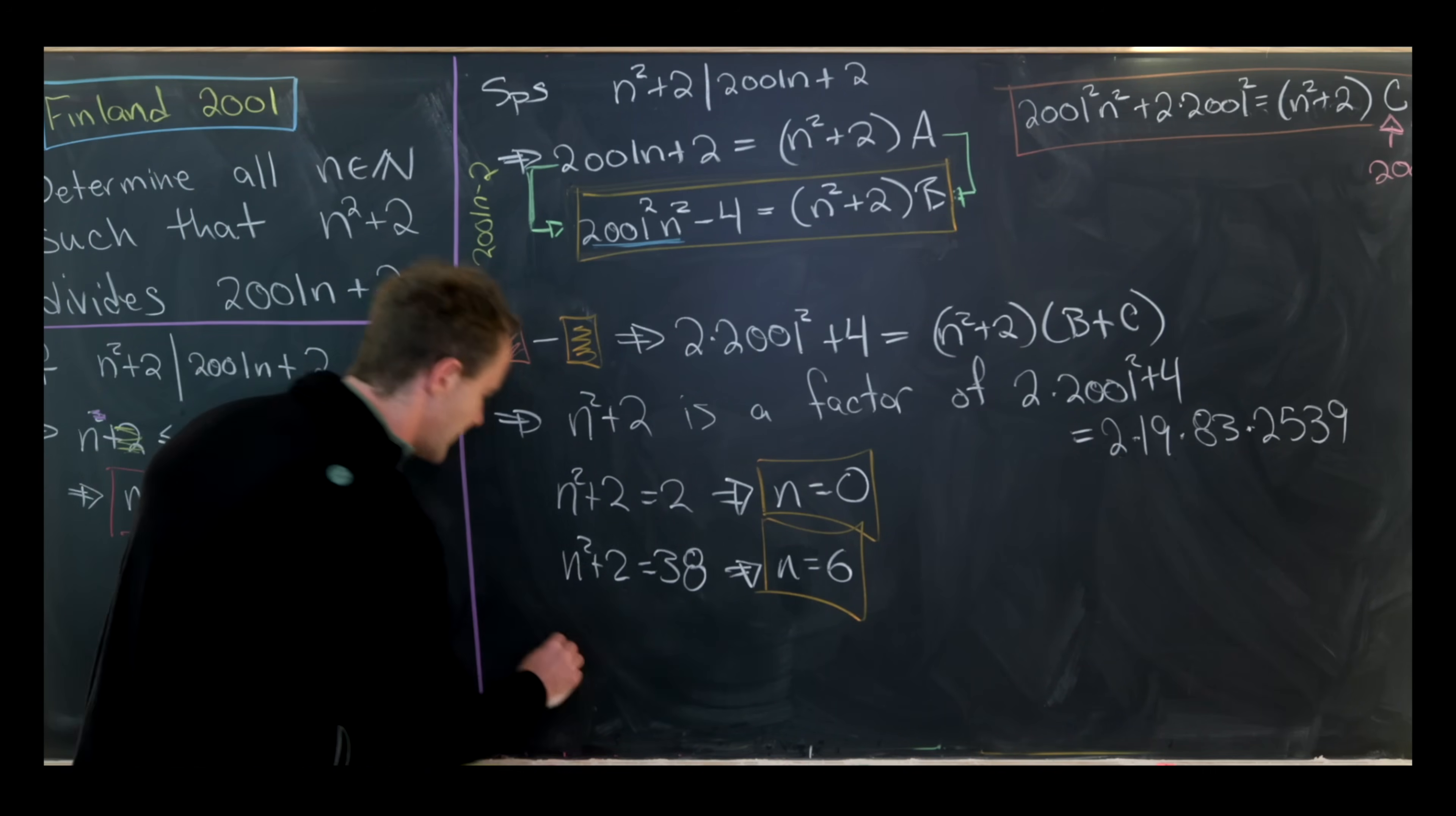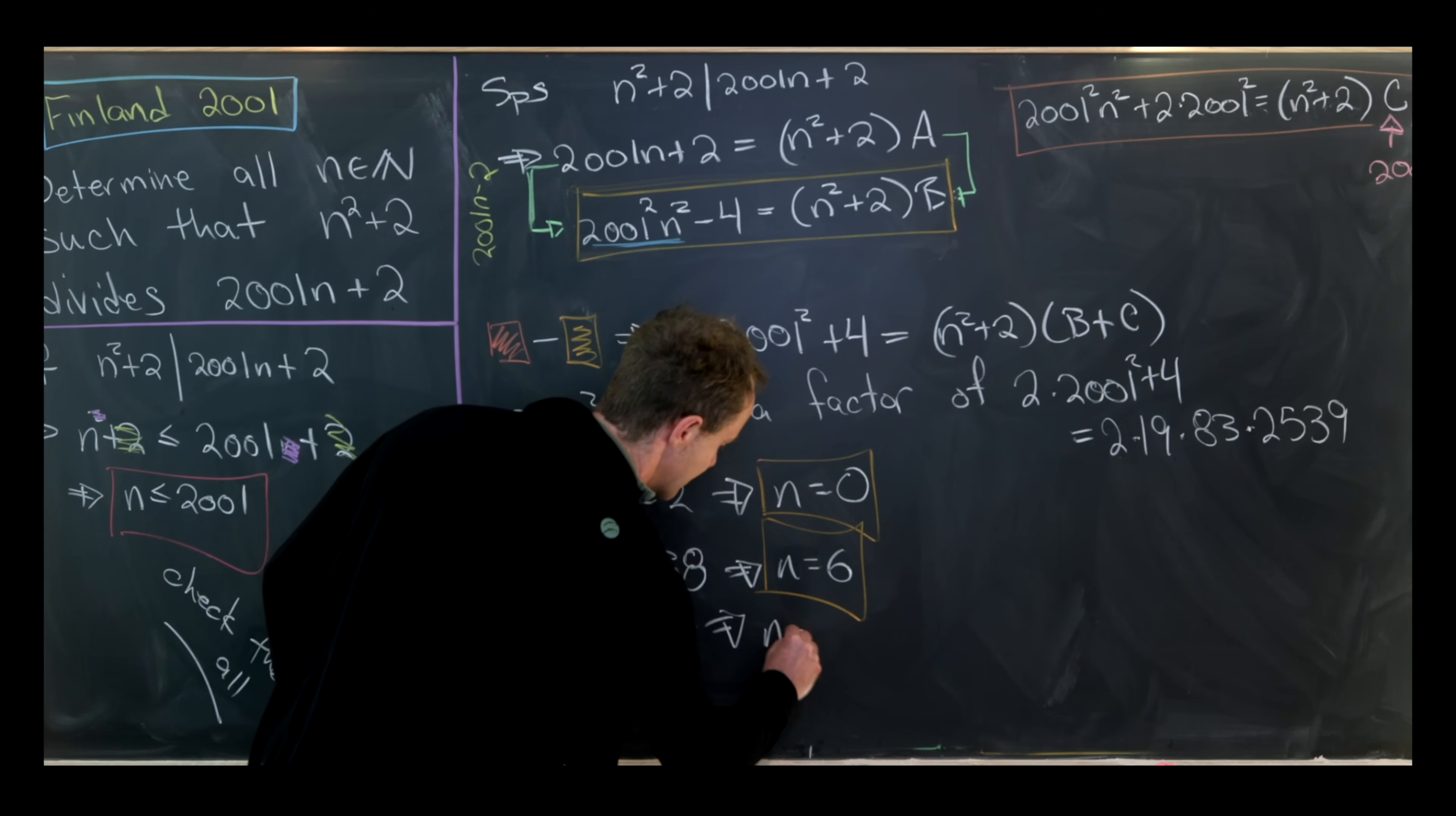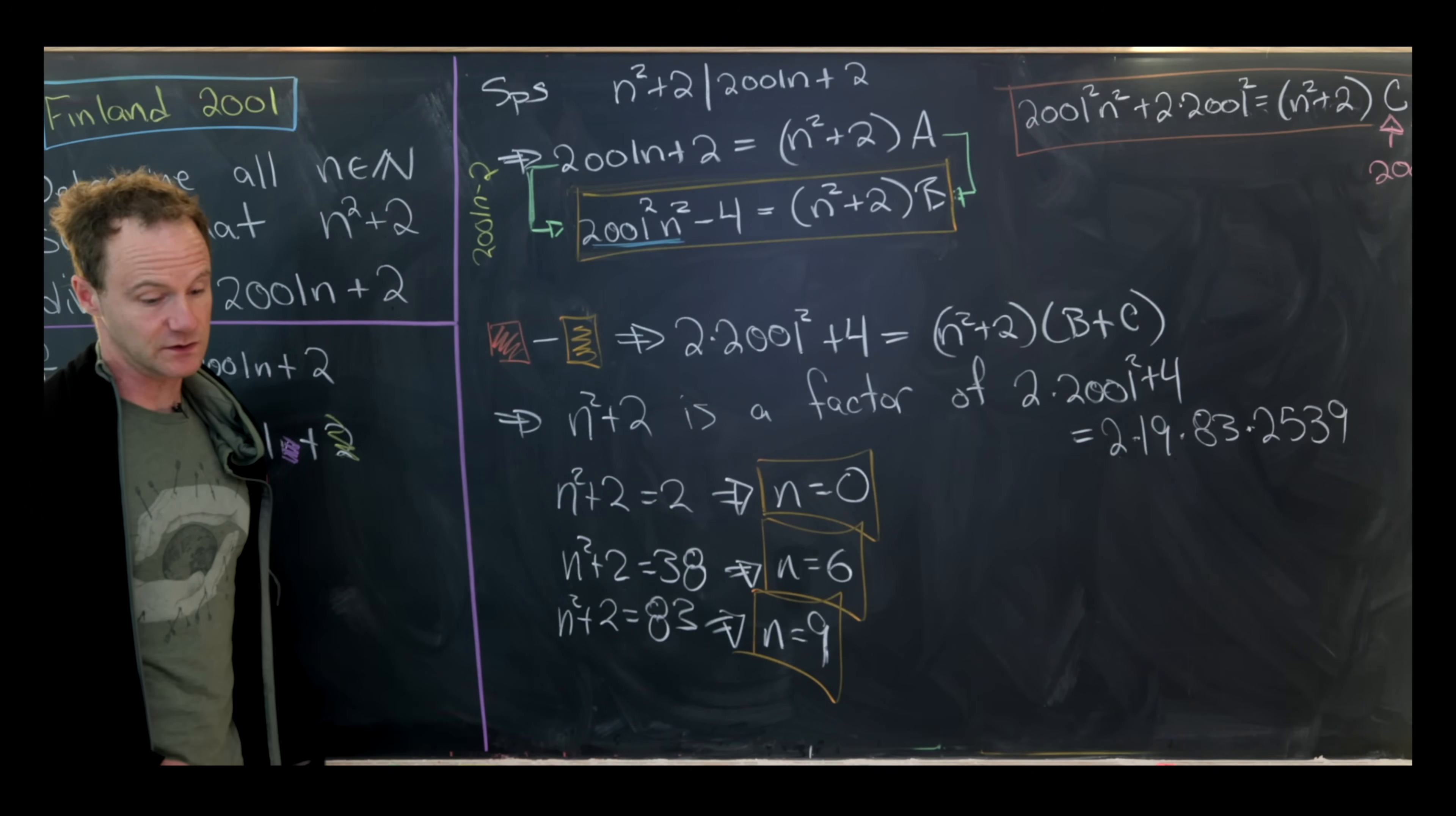So the one after that, which is maybe the one that's most obvious if you just look at those prime factors, is n² + 2 equals 83, which means n² is 81, which means n is 9.